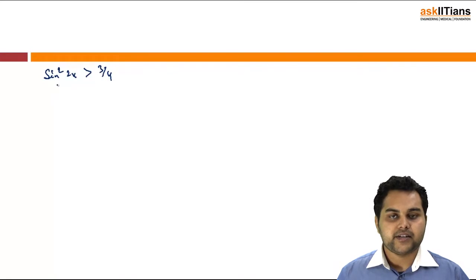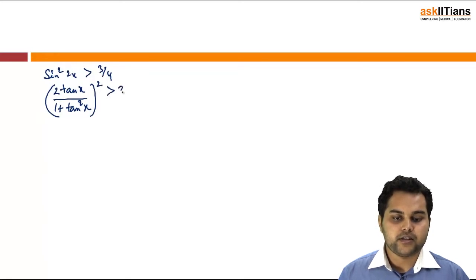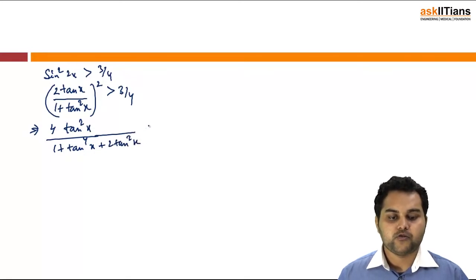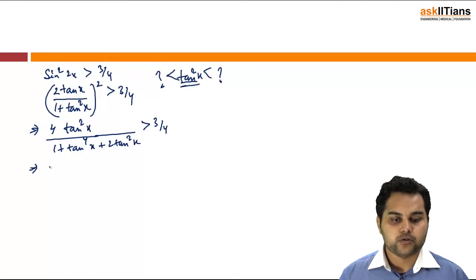I can write sin(2x) as 2tanx / (1 + tan²x). Squaring this and setting it greater than 3/4, and letting t = tan²x, I get 4tan²x / (1 + tan²x)² > 3/4. I need to find the value — the region — in which tan²x lies.